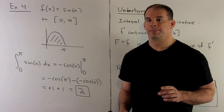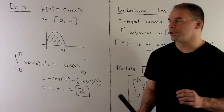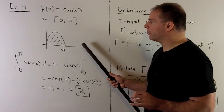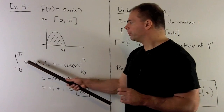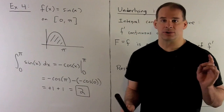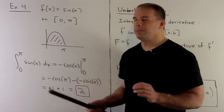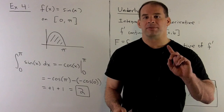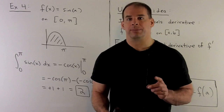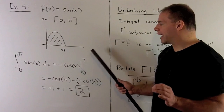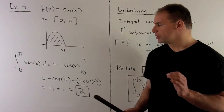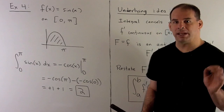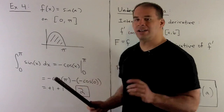One more example using trig functions. Let f(x) = sin(x) on the interval from zero to π — we're looking at the area under the sine curve. Setting up the definite integral, we need to find an antiderivative of sin(x). Since the derivative of sine is cosine, going the other direction we throw in a minus sign, so our antiderivative is minus cos(x). Evaluating at π and zero: cosine of π is minus one so we get one; cosine of zero is one so we get another one. Adding them together gives two — the area of this region is two.